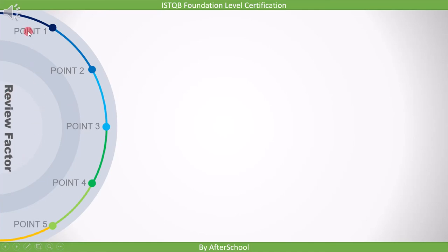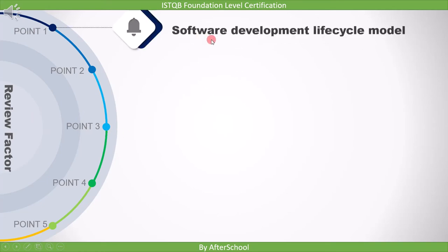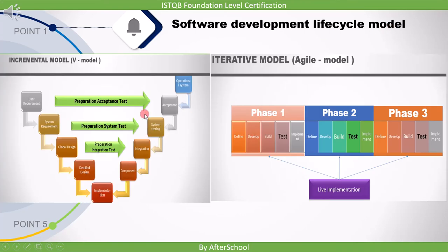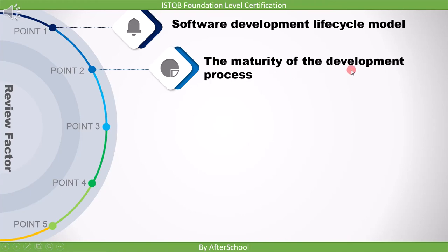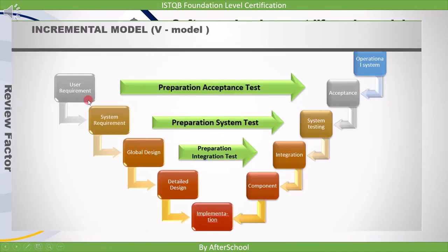There are five factors based on which we decide how formal our review will be. The first factor is the software development lifecycle model. Let's see two development models: incremental model and iterative model. In the iterative model, sometimes we go for the informal review process because the software undergoes a lot of changes in each iteration, and performing a formal review process will be costly. The second point is the maturity of the development process.